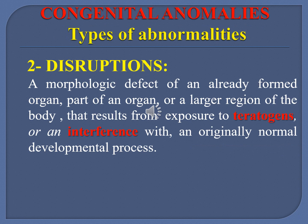The second variety of abnormalities is disruption, which is a morphological defect of an already formed organ or part of an organ. Here, the organ is already formed, and exposure to teratogens or interference with an originally normal developmental process leads to a disruption. An example is the umbilical band condition.